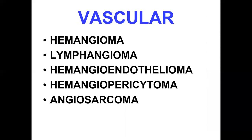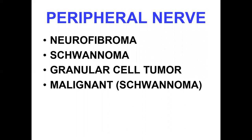Vascular tumors include hemangioma and lymphangioma, which are benign, and hemangioendothelioma, hemangiopericytoma, and angiosarcoma, which are malignant. The benign ones have been covered under vascular tumors of the blood vessels. Peripheral nerve tumors include benign neurofibroma, schwannoma, and granular cell tumor, and the malignant is malignant schwannoma — malignant peripheral nerve sheath tumor. These will be taught in detail when covering the CNS and peripheral nervous system.